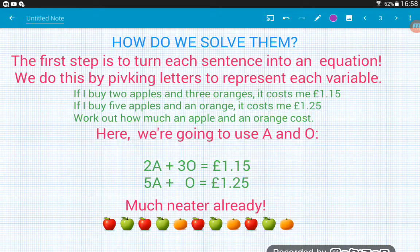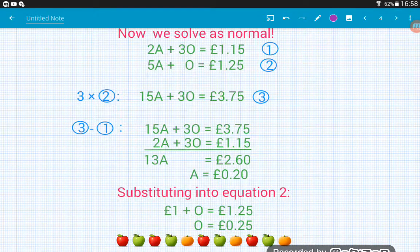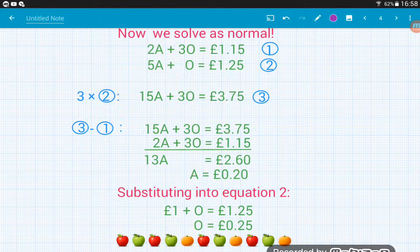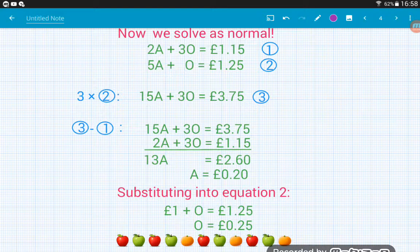Once we've done that, we then set about solving them the same way that we have in the other two videos. We've got our two equations now. So we alter one equation. We only need to alter one equation here to get the same amount of oranges. So we multiply equation two by three and that gives us 15A add 3O is £3.75. So then we do this new equation three, take away equation one to eliminate the oranges. That tells us 13 apples will cost us £2.60. And then if we divide that by 13, an apple is going to cost us 0.2 of a pound or 20p.